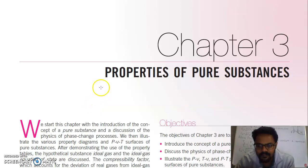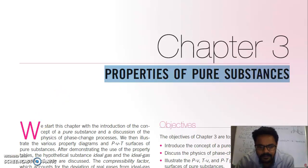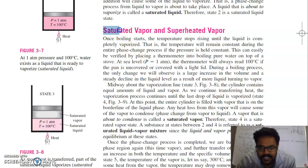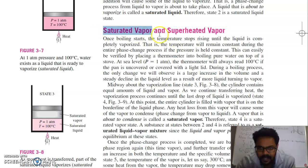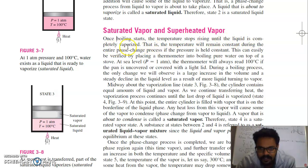Good morning. Today we will start with the third chapter, that is properties of pure substances. We will start with saturated vapour and superheated vapour — when your liquid changes its phase into gases or vapour form, that is called saturated vapour. And if you further heat, that will become superheated vapour. Once boiling starts, the temperature stops rising until the liquid is completely vaporised.